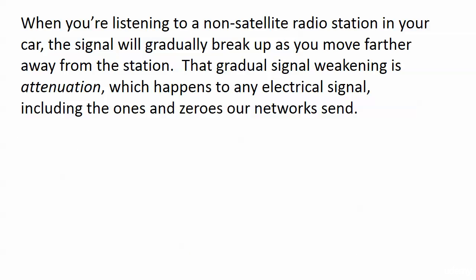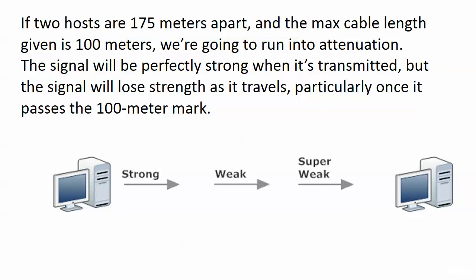When you're listening to a regular radio station — non-satellite — in your car, we've all been there: the signal gradually breaks up as you go farther and farther away from the station. That gradual signal weakening is called attenuation, and it happens to any electrical signal, including the ones and zeros our networks are busy sending. If we have hosts that are 175 meters apart and the maximum recommended cable length is 100 meters, we're going to push that.